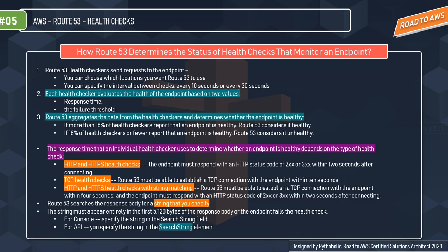The next type is HTTP and HTTPS health checks with string matching. Route 53 must be able to establish a TCP connection within four seconds, and the endpoint must respond with an HTTP status code in the 2xx or 3xx range within two seconds after connecting. Route 53 then searches the response body for a string you specify — that string must appear entirely within the first 5,120 bytes of the response body, or the endpoint fails the health check. For example, if the string is 'I am safe' and it appears in the response body, Route 53 marks it as healthy. You can specify this string via the search string field in the console, or via the search string element in the API.